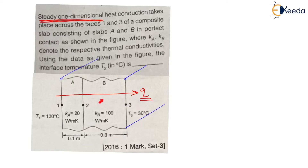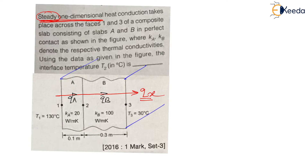Now, as the heat is flowing steadily, at each and every location the heat transfer is the same because of the word 'steady.' Heat is flowing in one direction, along the x direction from 1 to 3. We call this Qx — heat transfer in the x direction. As the flow is steady, the heat transfer at each and every location is the same. That means heat transfer through slab A equals heat transfer through slab B equals Qx. For this heat transfer there will be a conduction resistance in slab A as well as in slab B.